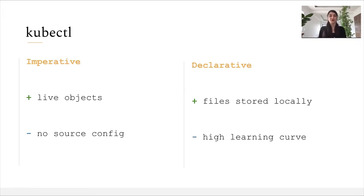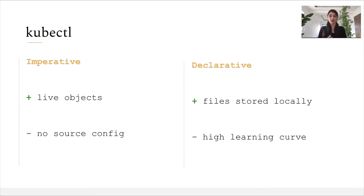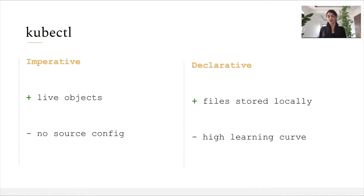That's why we have the declarative approach, which allows operations on files stored locally. We have the full representation of our manifest in YAML, and we'll be able to apply them to the cluster. The good thing about this approach is the fact that it allows directory-level operations. Usually when we deploy an application, we're going to have a deployment associated with a service, service account, config map, maybe a secret, an ingress — that's already more than six components. With the imperative approach, we'd have to create all of these resources manually, but with the declarative approach, we have directory-level operations which allow us to create all of these resources with one command. However, the downside is that it has a quite high learning curve, requiring an in-depth understanding of nested YAML configuration, and it can present some challenges while debugging and troubleshooting manifests.